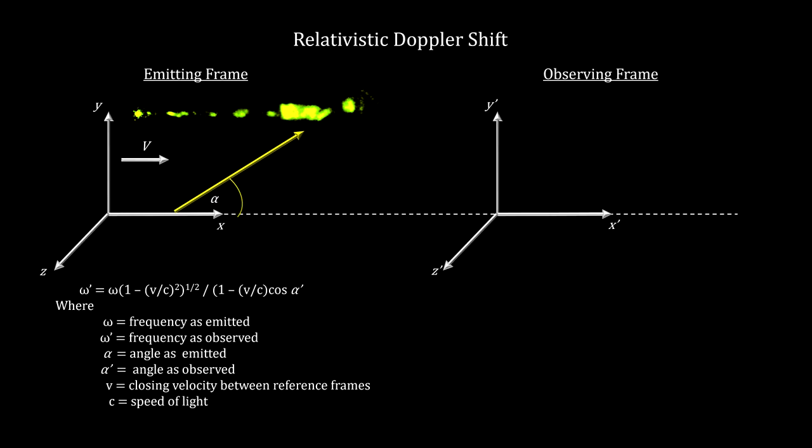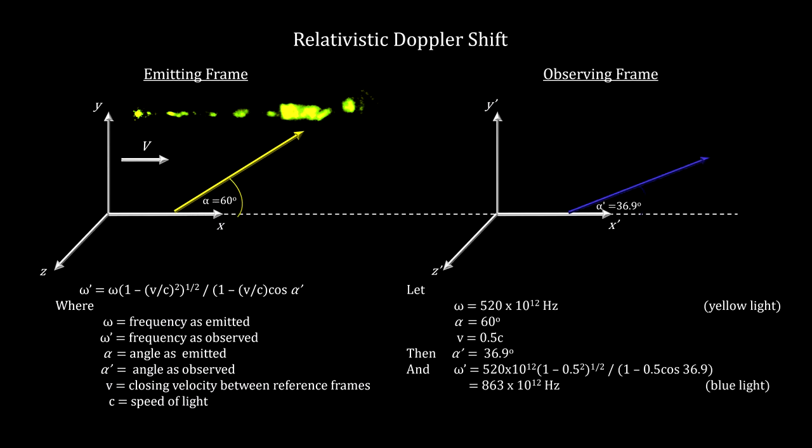Our last relevant effect is called relativistic Doppler shift. Due to space contraction, when we applied the Lorentz transformation against the frequency of a photon emitted in the same fashion as we just covered, we find that the frequency observed is greater than the frequency transmitted.